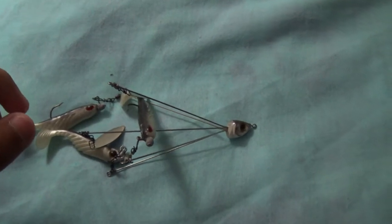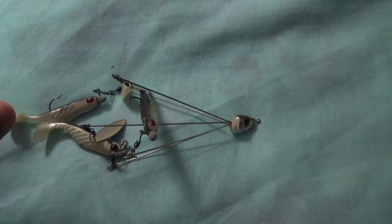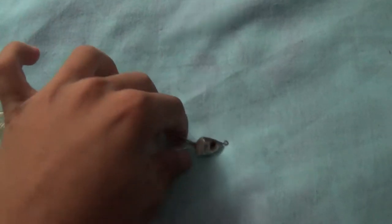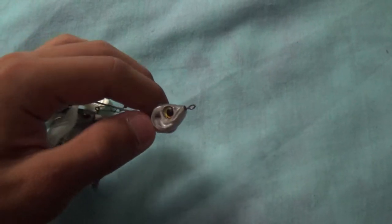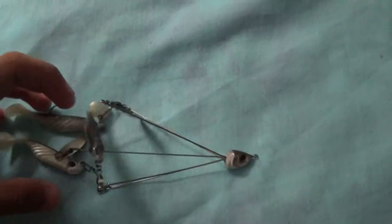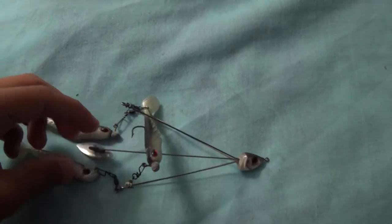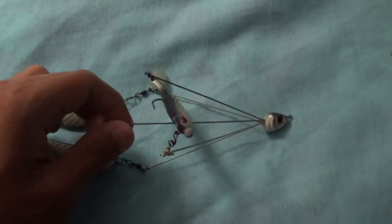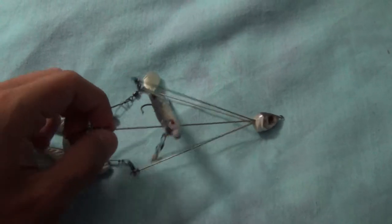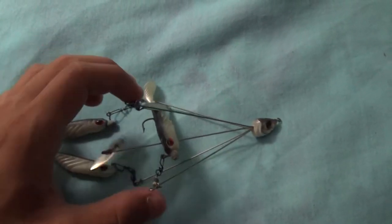This is the Picasso finesse school rig in shad color, spot and silver. It's a five inch, I mean four inch in the middle wire and three and a half inch on the four others.